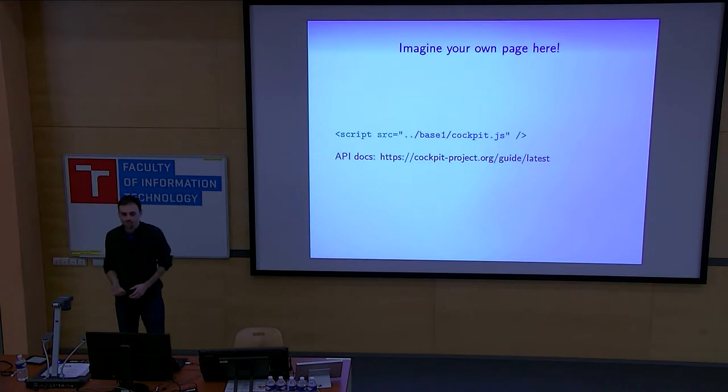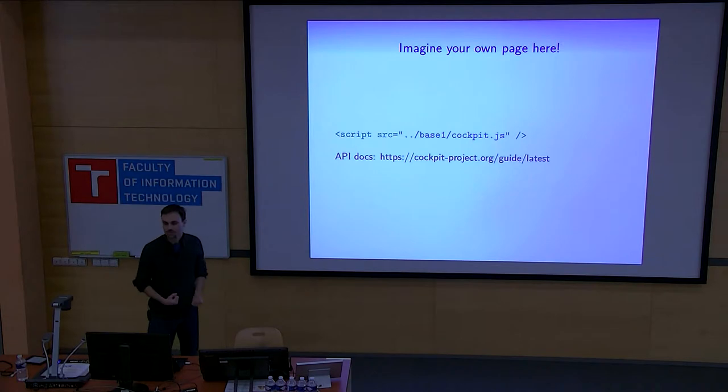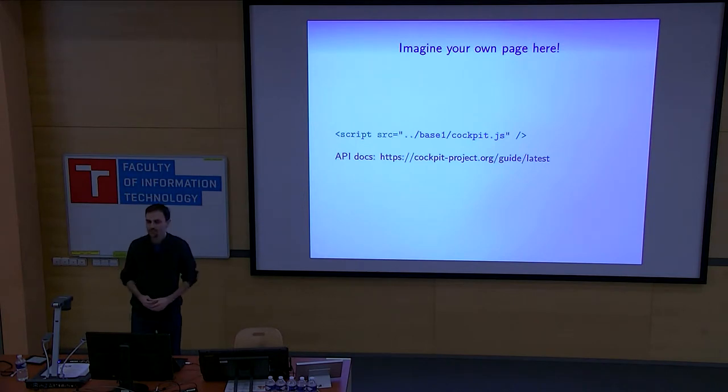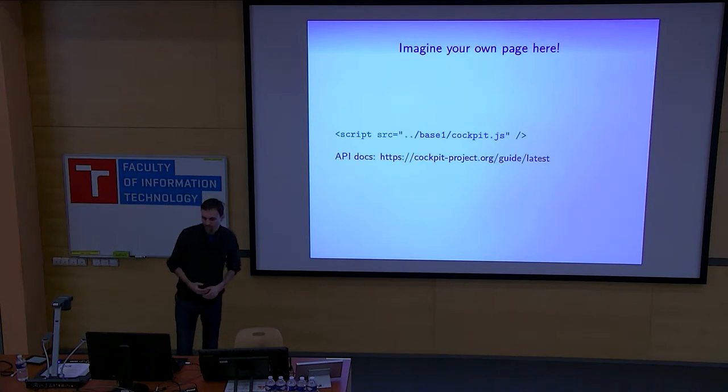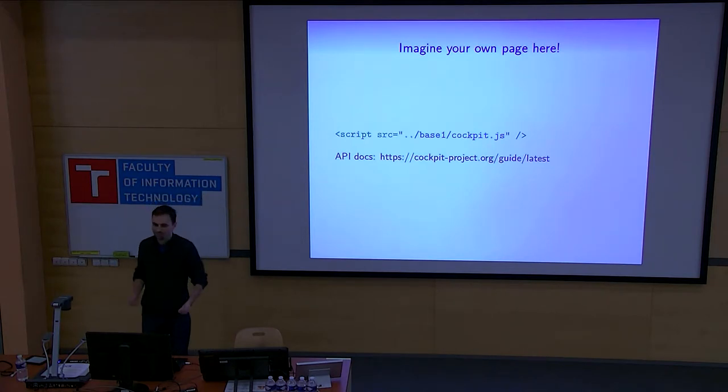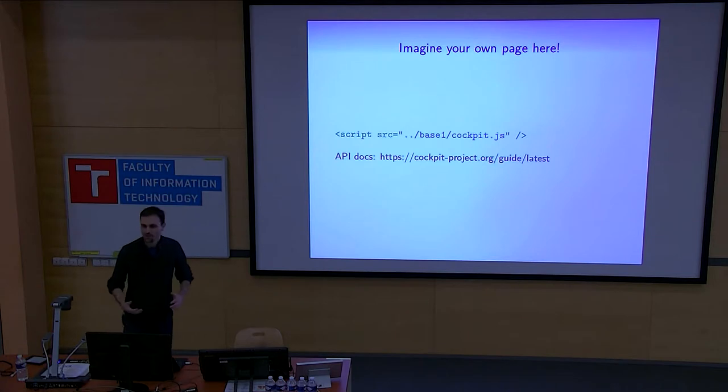But of course there will always be things that are missing for your use case. So Cockpit was designed from the ground up to be extensible, and we do this by offering a JavaScript API which you can include in your page. This offers you APIs to do stuff on the connected machine, like run a program or connect to a D-Bus service or open files and sockets.